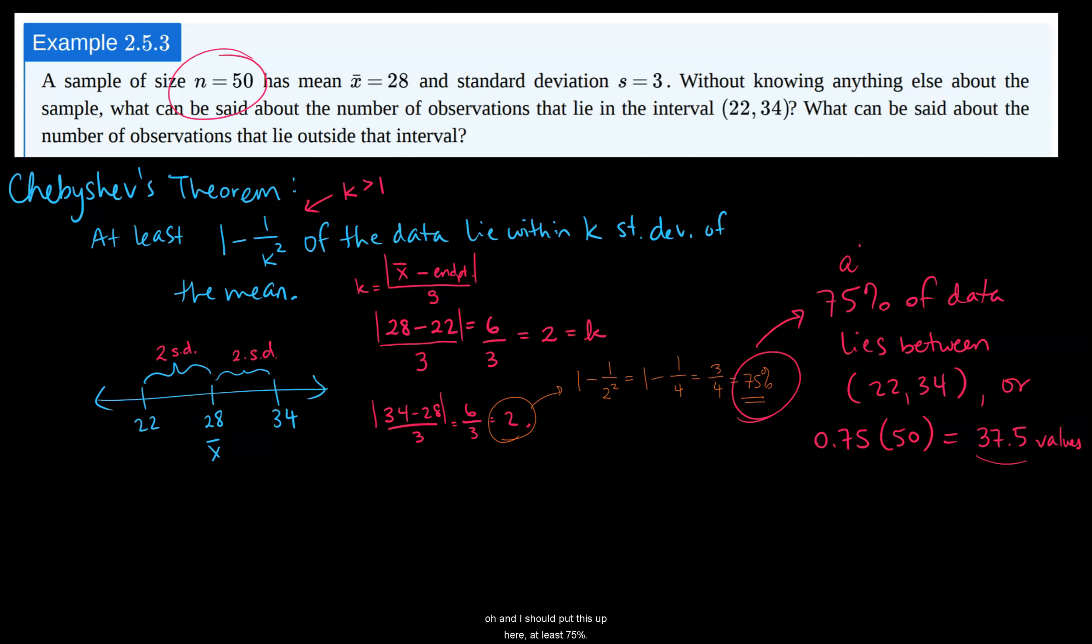And I should put this up here, at least 75%. So I would say at least 37 values are in that interval. I know the book says 38. They round it up. Oh, another small frustration.